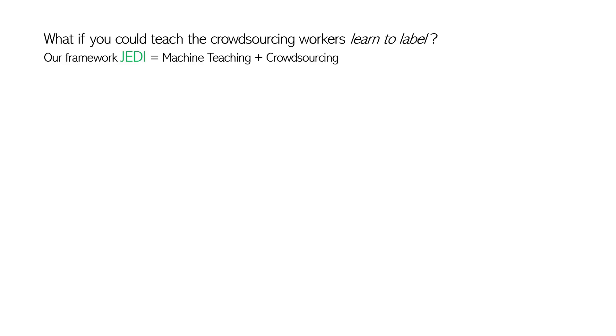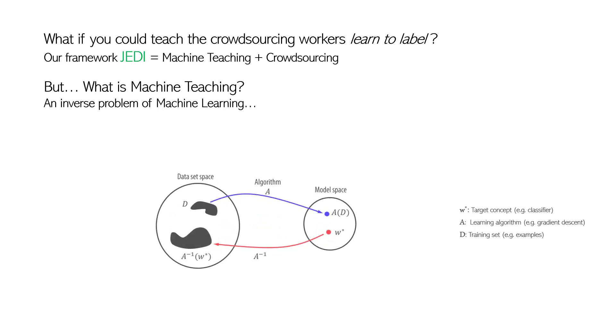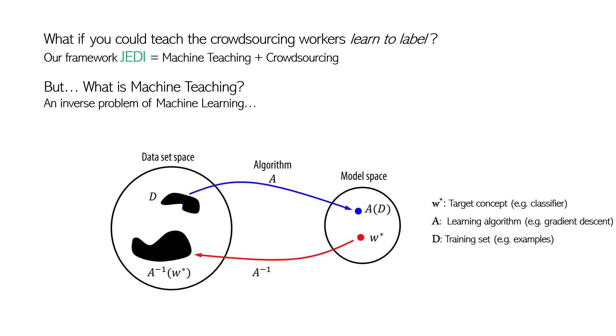The main idea is to perform machine teaching on those workers. But first, what is machine teaching? The general definition of machine teaching says that it is an inverse problem of machine learning. Unlike most machine learning systems, machine teaching requires the target model to be given in advance, and the goal is to find the optimal set of training examples.